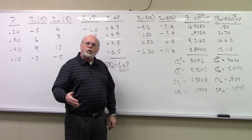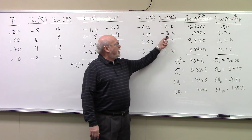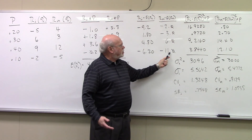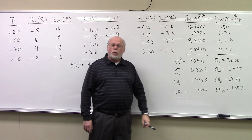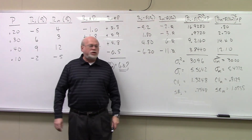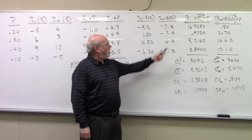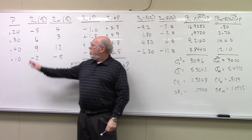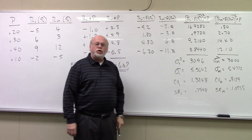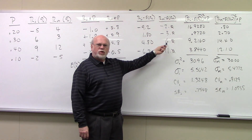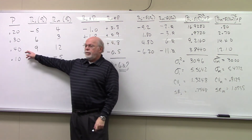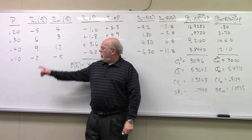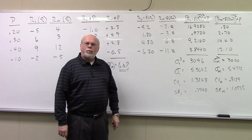The same process applies for the market deviations. We take each deviation, square it, and multiply by its probability of occurrence. Negative 2 squared times 0.2 gives 0.8. Negative 3 squared, which is 9, multiplied by 0.3 gives 2.70. 6 squared, which is 36, multiplied by 0.4 gives 14.4. And negative 11 squared times 0.1 gives 12.10.